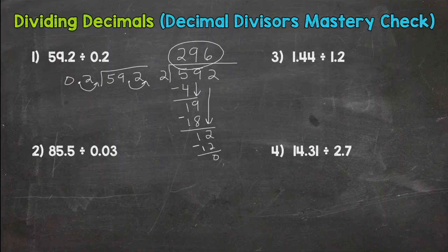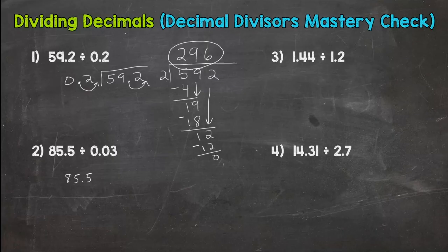Alright let's check number two here. We have 85.5 divided by 0.03. Now this one's a little different. We need to multiply by 100 or move the decimal twice. Do that to the inside as well. And we have 8550 divided by 3.